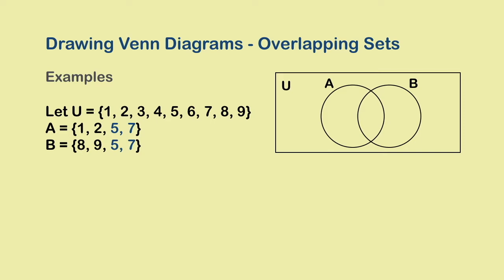We now need to populate it with elements. Again, we begin with the innermost region, the region of overlap between A and B. 5 and 7 are the elements that are common to both the sets, and so we put 5 and 7 in that region.